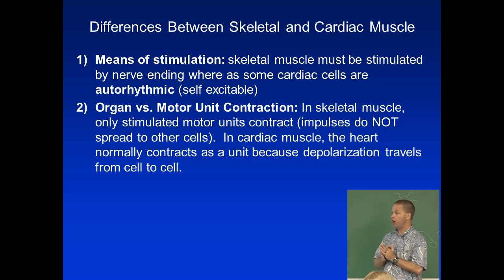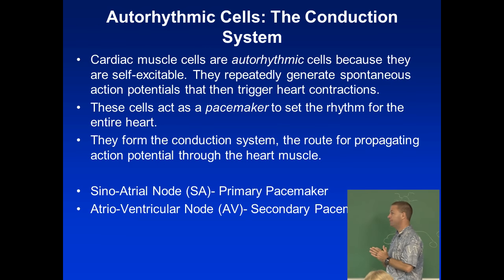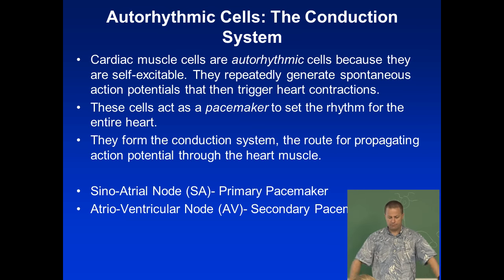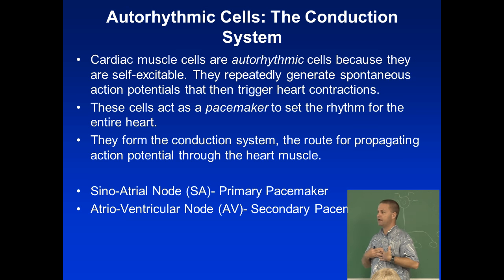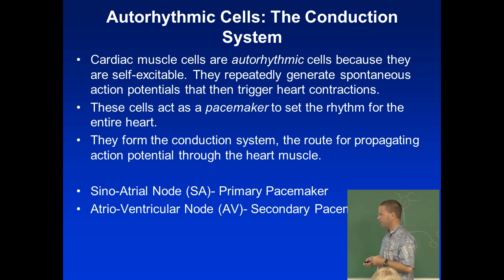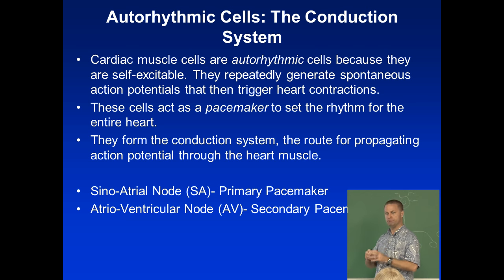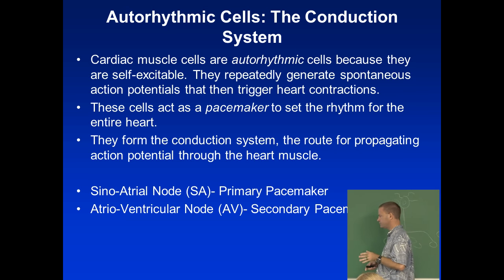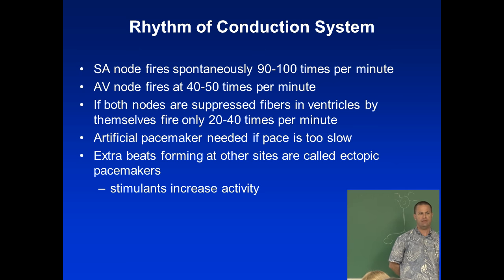Cardiac muscle cells are self-excitable and autorhythmic. Even when severed from the nervous system, the heart continues beating on its own — as demonstrated in physiology class experiments with a turtle's isolated heart. The heart has an intrinsic rhythm that can be modified by the brain, but the brain is not setting the initial rhythm.